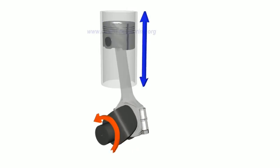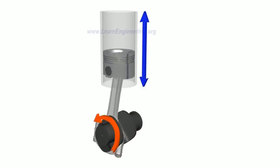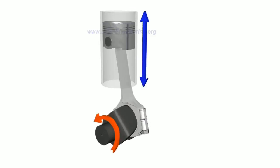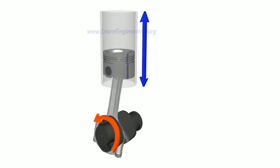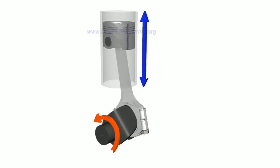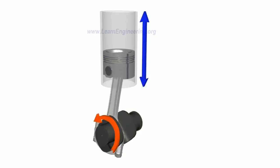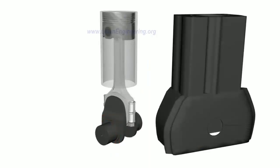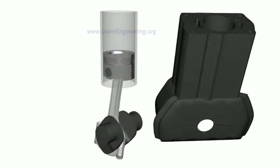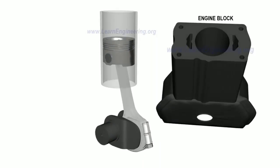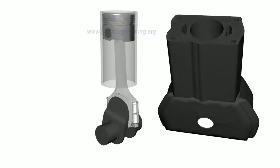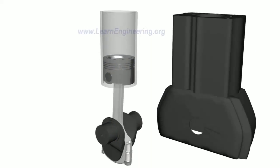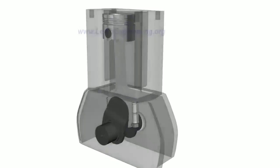The piston has a linear motion, while the crank has a rotary motion. In this mechanism, the engine block is fixed.